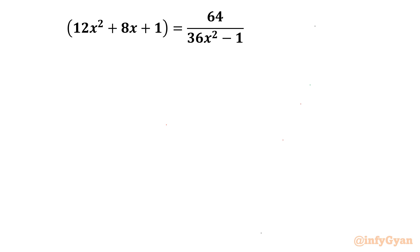Welcome to Infigyan, my dear friends. In this video we are going to take up one very interesting algebraic challenge. One equation is given to us: 12x² + 8x + 1 = 64 / (36x² - 1). This is a rational equation, and it is also a quartic equation once x = ±1/6 is exempted. Let me consider our domain first.